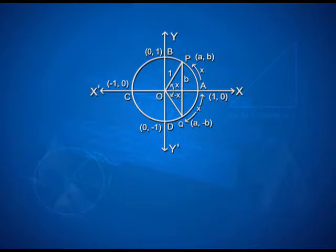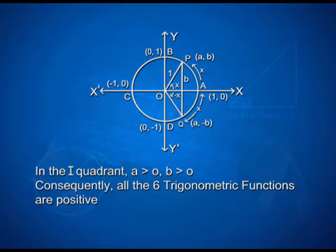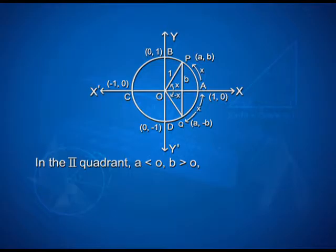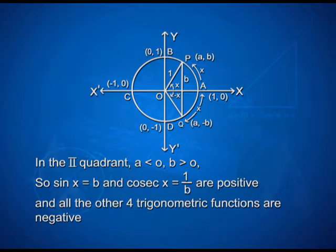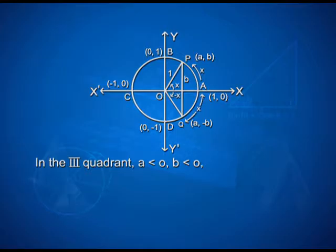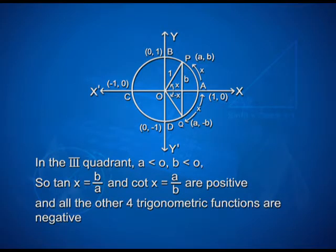Now let us see the signs in the quadrants. In the first quadrant, A > 0 and B > 0, consequently all six trigonometric functions are positive. In the second quadrant, A < 0 and B > 0, so sin x = B and cosec x = 1/B are positive and all the other four trigonometric functions are negative. In the third quadrant, A < 0 and B < 0, so tan x = B/A and cot x = A/B are positive and all the other four trigonometric functions are negative.